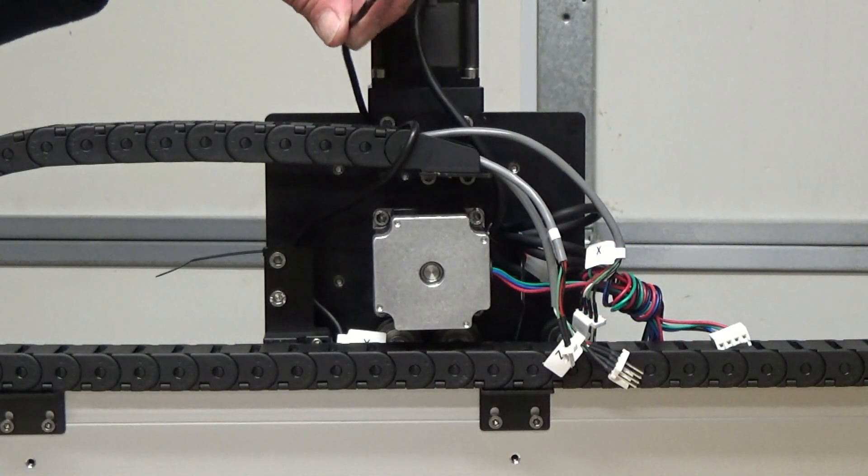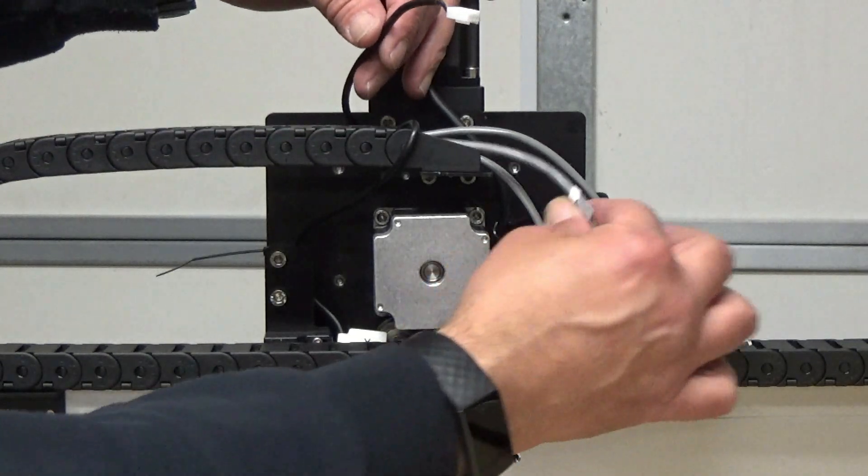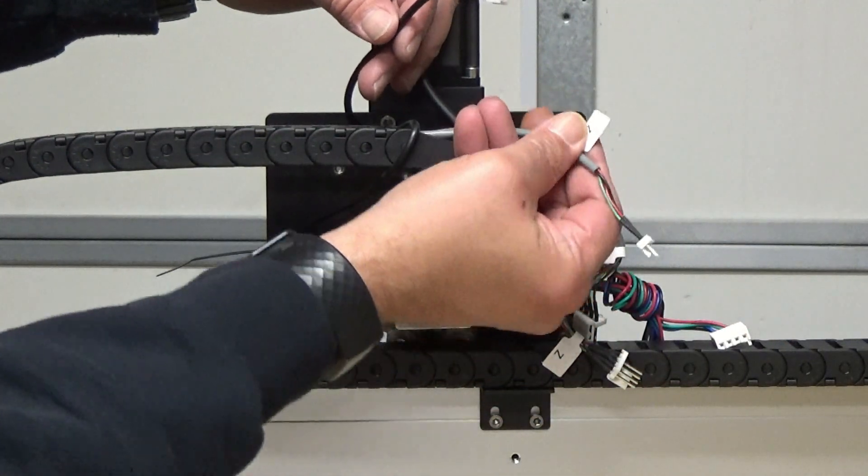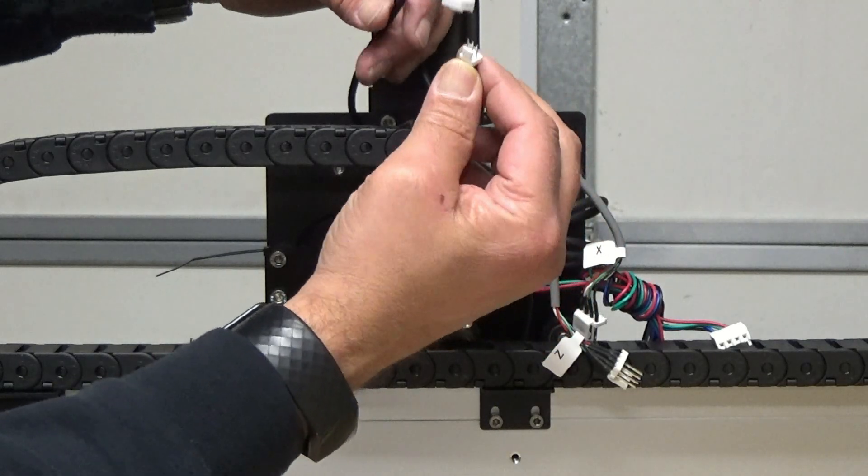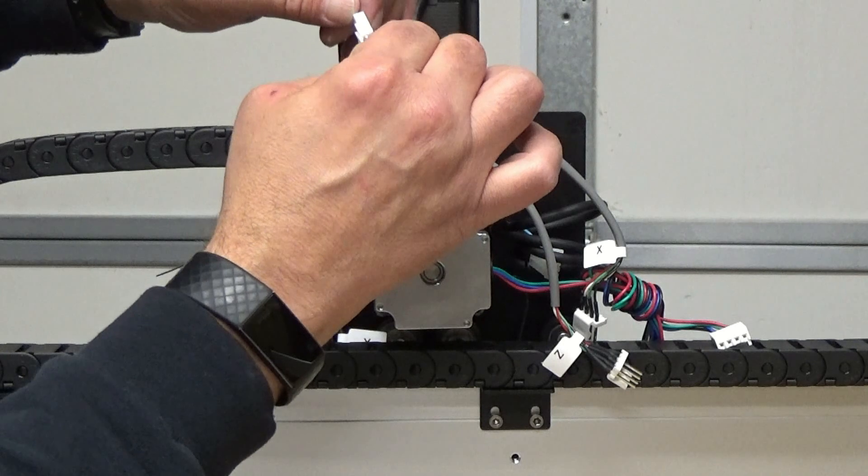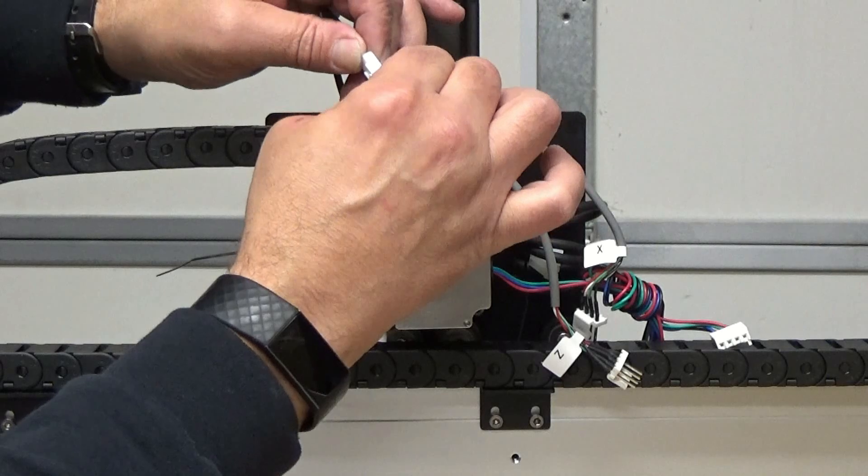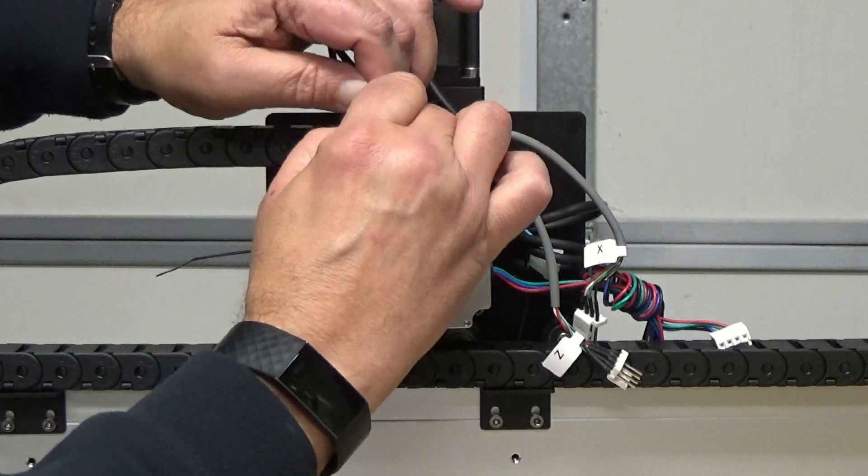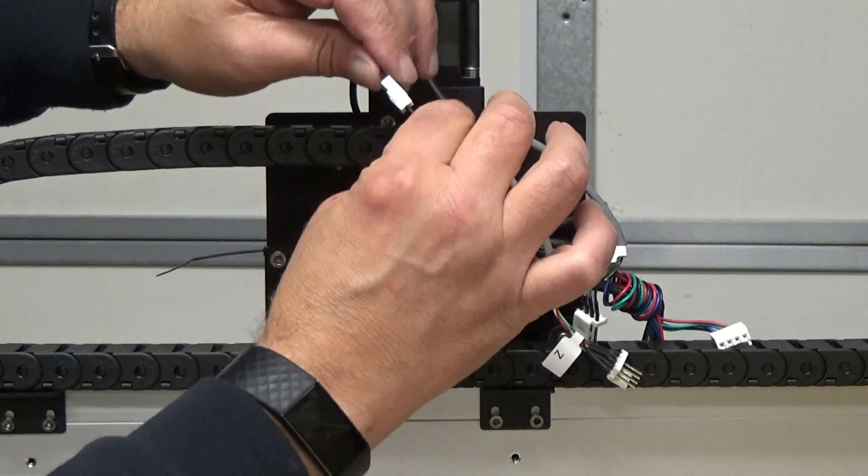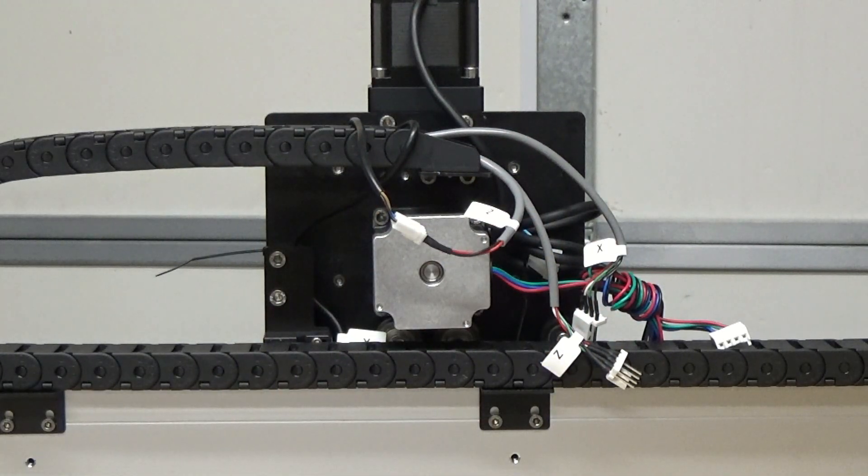So the short wire is for the proximity switch on the Z axis and then we locate the green or the gray wire for the Z and we see that it has a three pin. We simply plug that in and it doesn't snap together. Now we're ready to start wiring with electronics.